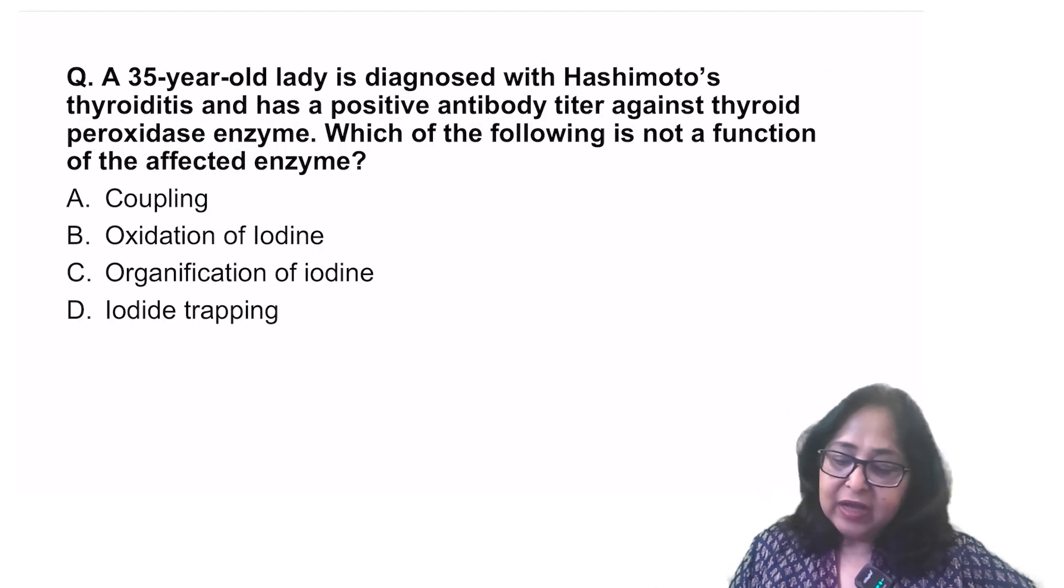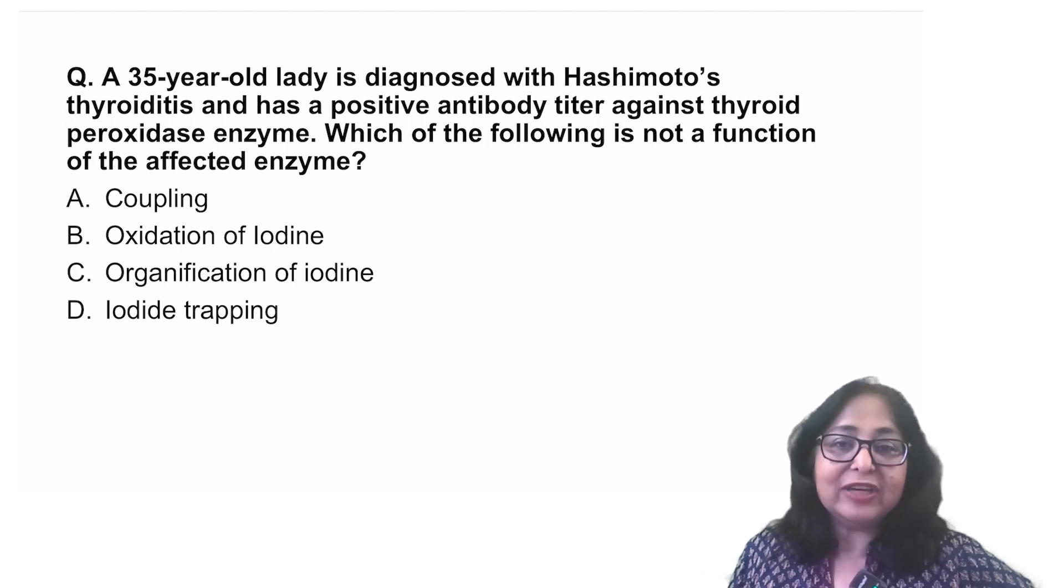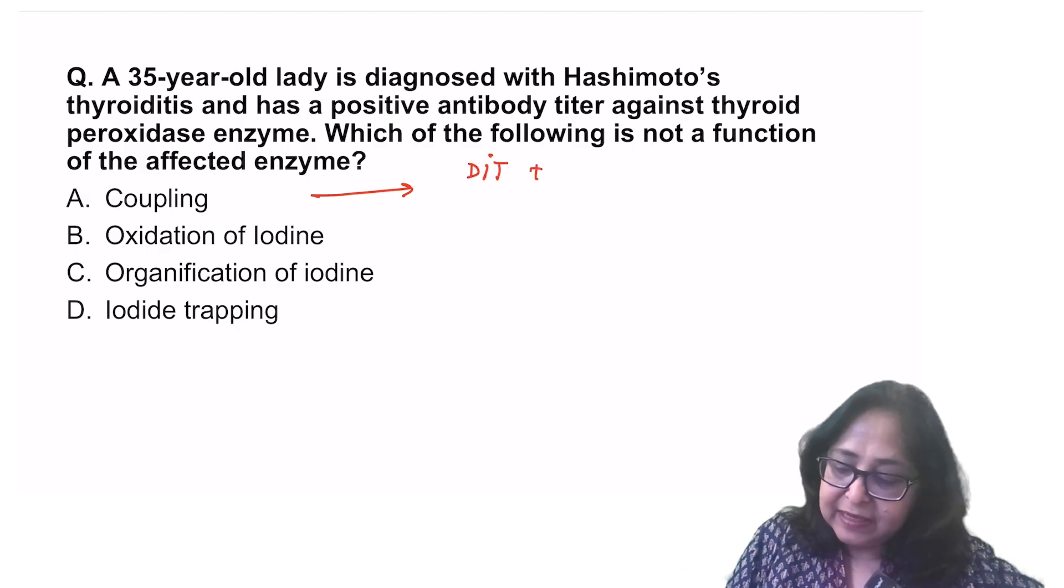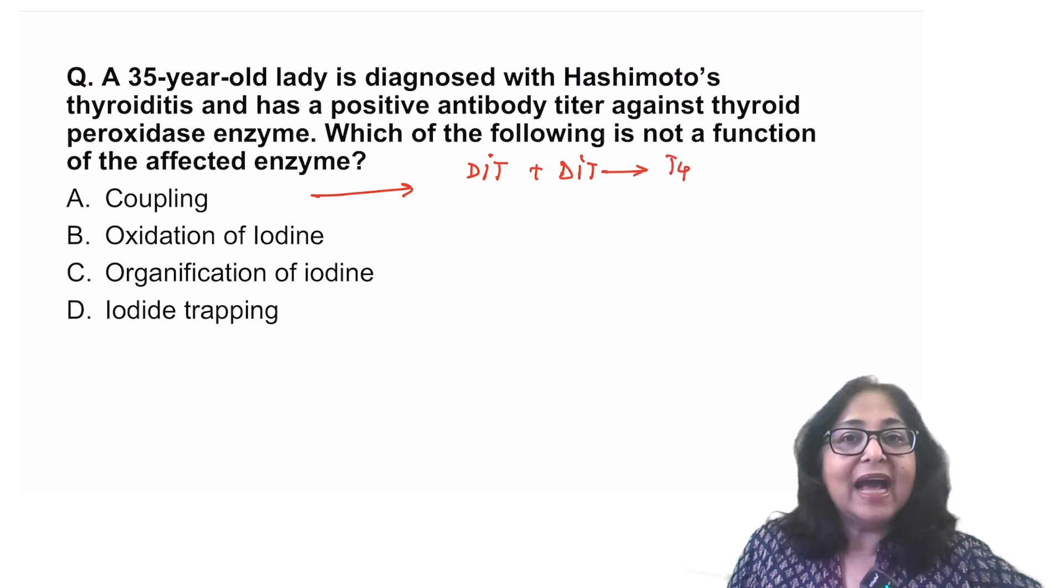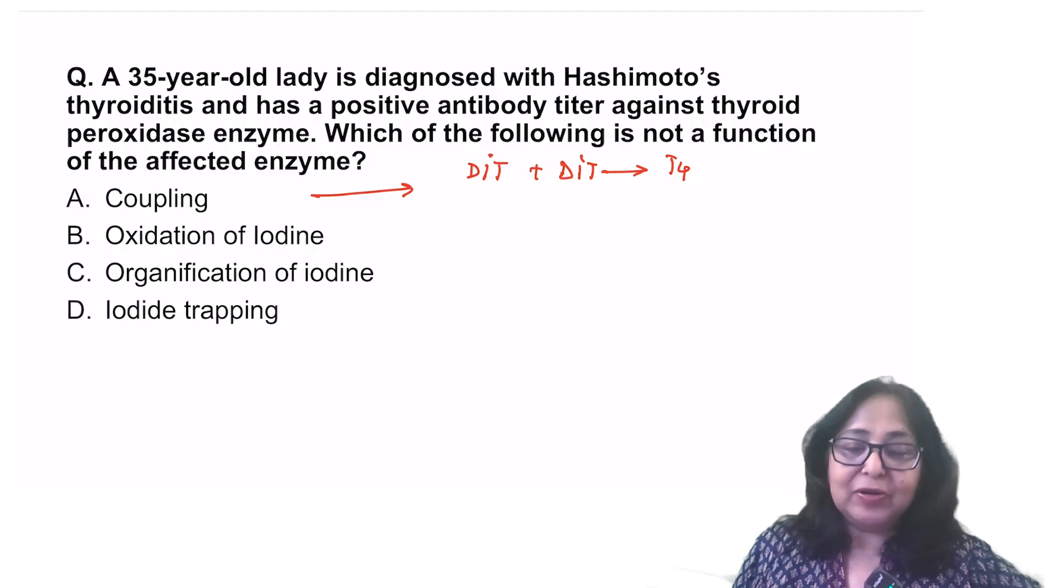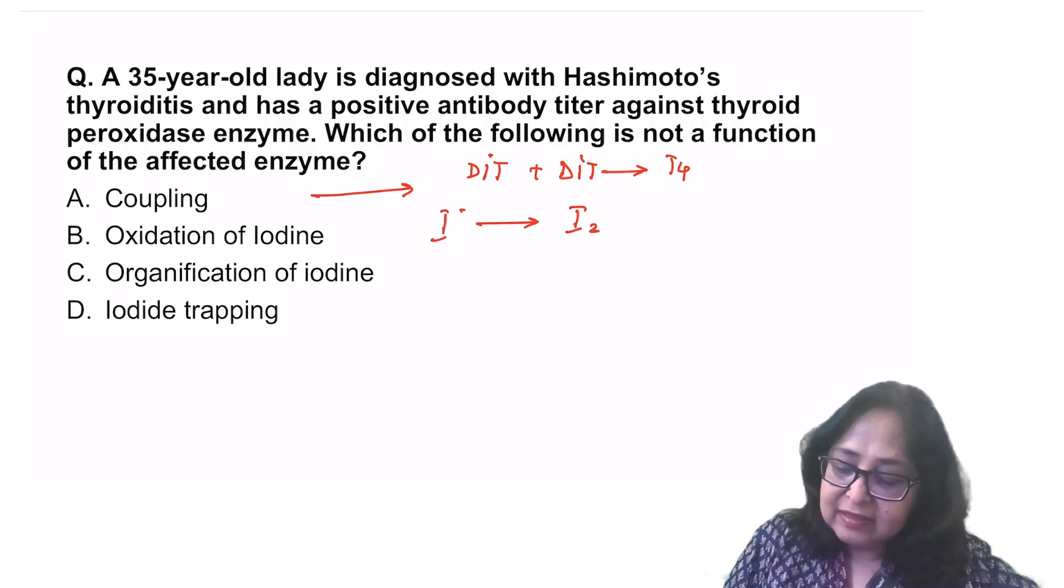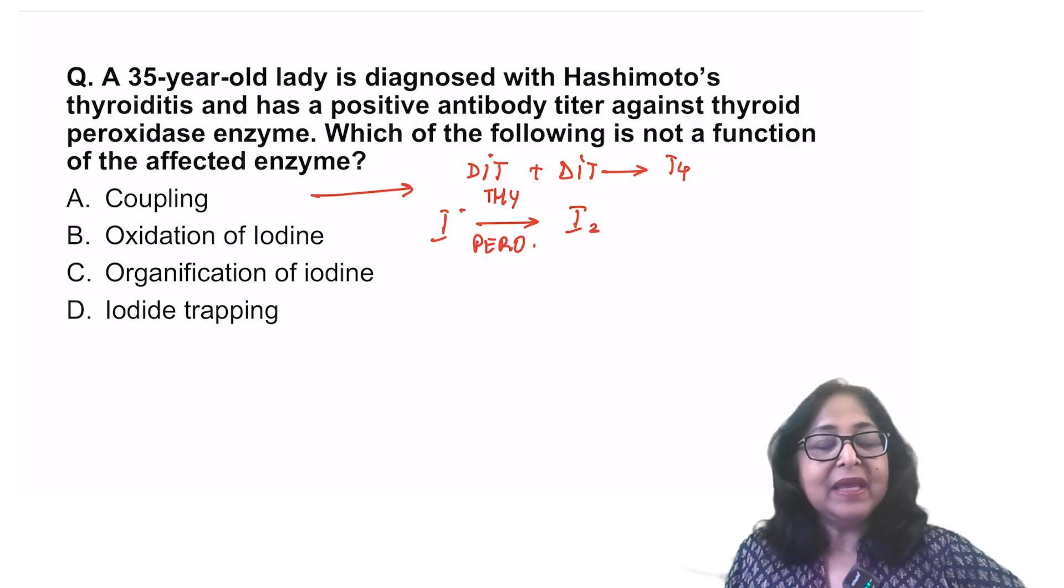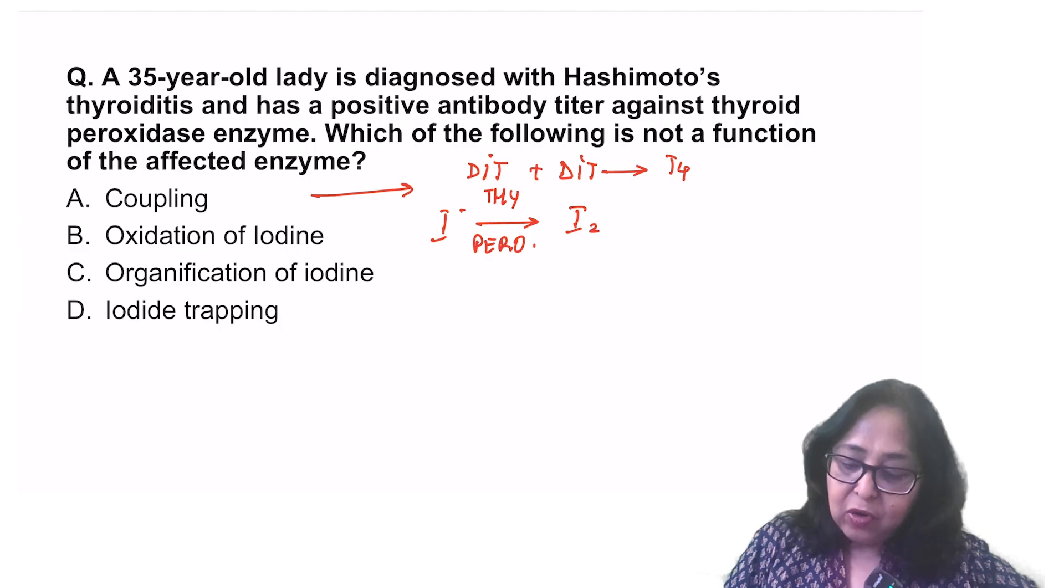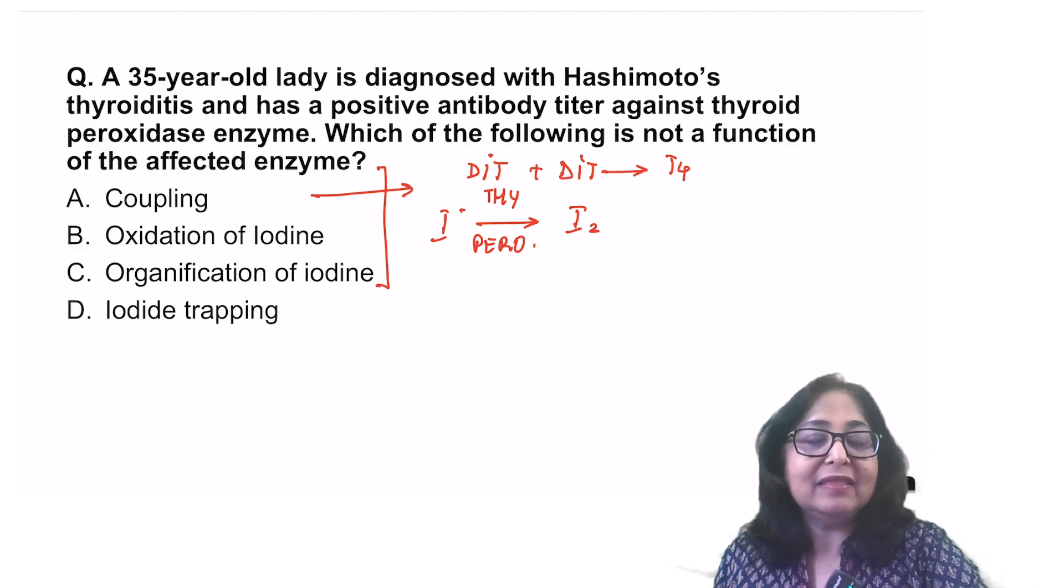A 35-year-old lady is diagnosed with Hashimoto's thyroiditis and has a positive antibody titer against thyroid peroxidase enzyme. Which of the following is not a function of the affected enzyme? Coupling requires thyroid peroxidase. What is coupling? Diiodotyrosine plus diiodotyrosine forms T4. Diiodotyrosine plus monoiodotyrosine forms T3. These are coupling reactions and they require the presence of thyroid peroxidase. Oxidation of iodine, I- is converted to I2. This is in the presence of the enzyme thyroid peroxidase. Organification of iodine. What is organification? Iodine is added to tyrosine to form monoiodo and diiodotyrosine. This also requires thyroid peroxidase. So the first three options definitely require thyroid peroxidase.